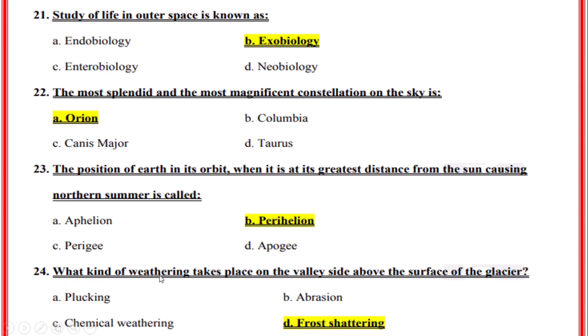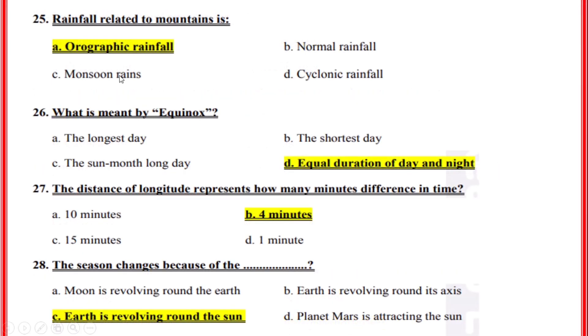What kind of weathering takes place on the valley side above the surface of the glacier? Correct option: D, Frost shattering. Rainfall related to mountains is? Correct option: A, Orographic rainfall.